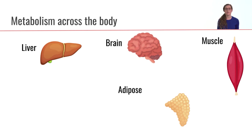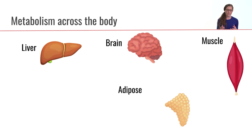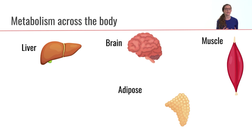So let's talk about metabolism across the body. In our last lecture we talked about a whole series of different anabolic and catabolic reactions. However, not all tissues in the body can perform all of these metabolic pathways. So now what we're going to do is talk through different organs in the body, talk about what metabolic pathways they can perform, and also talk about what their primary favorite fuel sources are, because every cell needs energy.